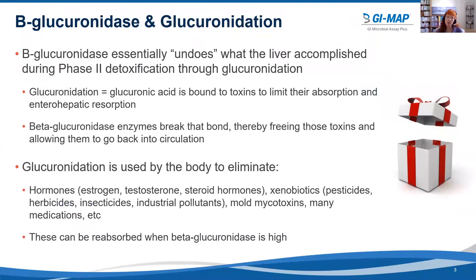In order to understand beta-glucuronidase, we need to understand glucuronidation. The problem with beta-glucuronidase is it essentially undoes what the liver accomplished during phase 2 detoxification through glucuronidation. With glucuronidation, glucuronic acid is bound to toxins to limit their absorption and enterohepatic resorption. Beta-glucuronidase enzymes break that bond, thereby freeing those toxins and allowing them to go back into circulation.